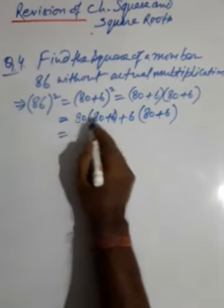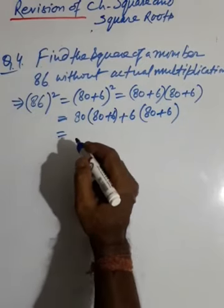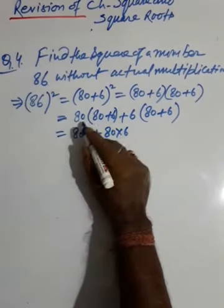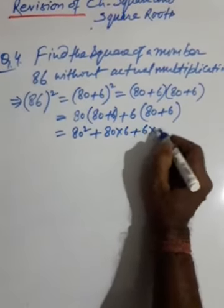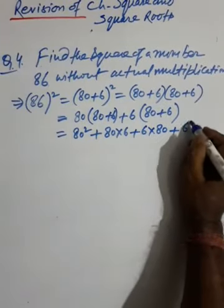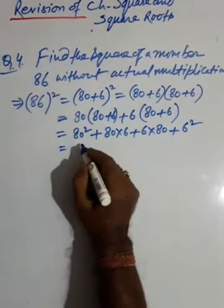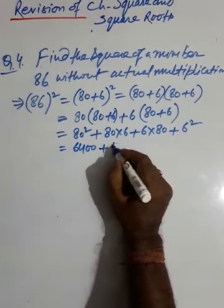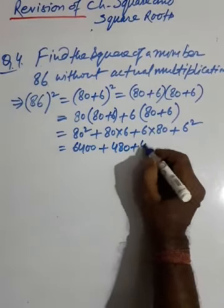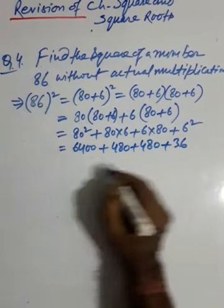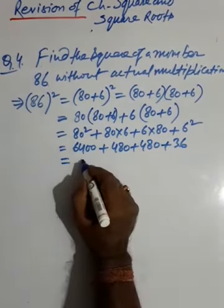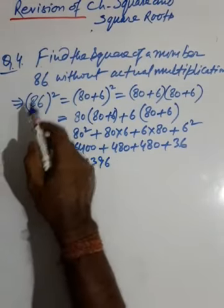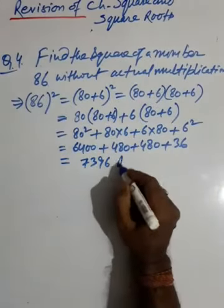Expanding: 80×80 + 80×6 + 6×80 + 6² = 80² + 80×6 + 6×80 + 6². That gives 6400 + 480 + 480 + 36. Adding these together you get 7396. This is how you find the square of any number without actual multiplication.